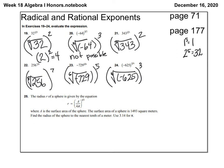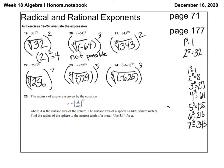The cube root of 343: 1 cubed is 1, 2 cubed is 8, 3 cubed is 27, 4 cubed is 64, 5 cubed is 125, 6 cubed is 216, 7 cubed is 343. So the cube root of 343 is 7. And 7 to the second power is 49. So 49 is the answer to number 21.